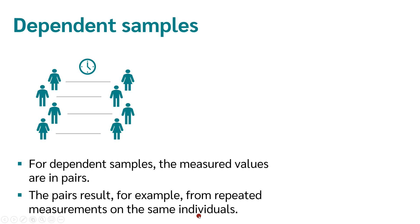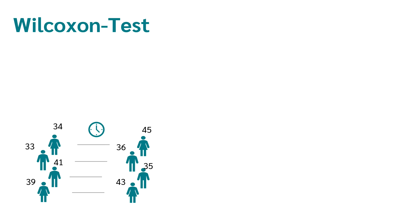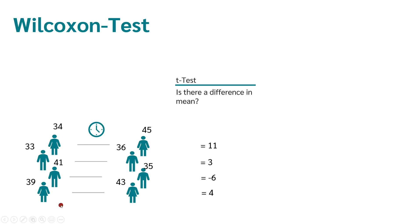What is the difference between the t-test for dependent samples and the Wilcoxon test? The t-test for dependent samples tests whether there's a difference in means. If we have a dependent sample — say we took a value from each person once in the morning and once in the evening — then we can calculate the difference from each pair. For example, 45 minus 34 equals 11. The t-test for dependent samples then tests whether these differences differ from 0 or not.